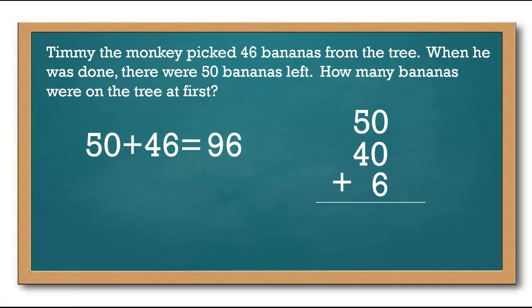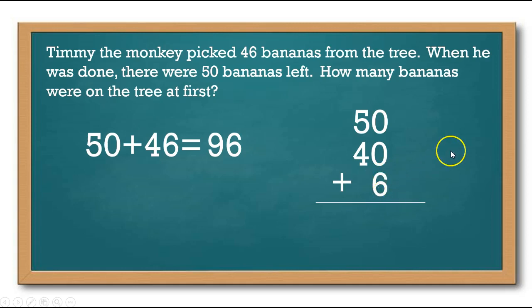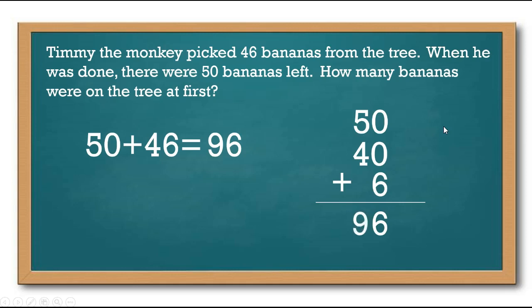And we're going to add all of this together. Do we have any ones here to add? Well, these are zeros, so those don't count — there's nothing there. But we do have a 6, so let's put 6 there. Now do we have tens to add together? Yes, we have 5 and 4. So what's 5 plus 4? 9. That gives us the answer of 96. Very good.